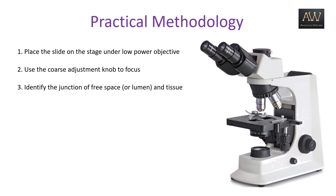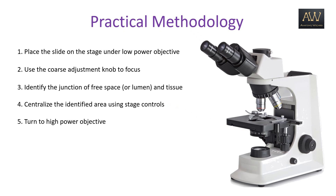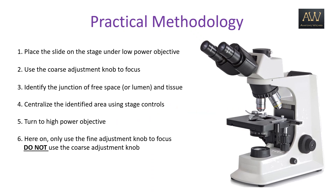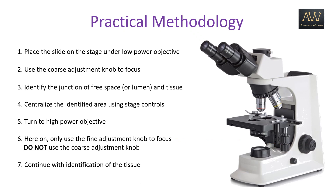Identify the junction of the free space or the lumen and the tissue. Then centralize the identified area using stage controls. After that, turn to the high power objective. From here on, only use the fine adjustment knob to focus. Do not use the coarse adjustment knob or else you will end up breaking the slide. Finally, continue with the identification of the tissue.